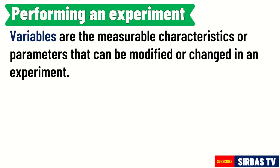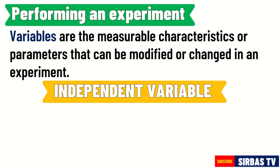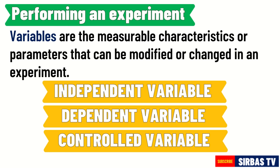There are three types of variables. The independent variable is the variable or condition that you can change in an experiment. The dependent variable is the variable or condition that you measure or observe. And the controlled variable is the variable that you keep constant or unchanged during an experiment. We are going to elaborate on these variables in our next video.